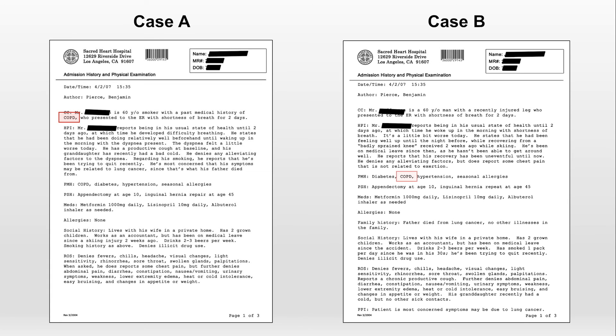The answer lies in where the information is presented in the note. In case A, which most people thought was a COPD exacerbation, the history of COPD is listed prominently within the chief complaint, whereas in case B it's just listed in the past medical history. In case B, which most people thought was a PE, a history of a recent leg injury is listed in the chief complaint, while in case A the information is buried in the social history. Case A places a sick contact in the history of present illness, while case B inappropriately places it under the review of systems. And the smoking history is in the HPI of case A and under social history in case B. Both groups were given the same information that logically should have had the same impact on their reasoning, but because that information was presented in a different order, they reached different conclusions. This is classic cognitive bias, one that is sometimes called the primacy effect, in which information presented first is recalled the best and thus has the greatest weight given to it.